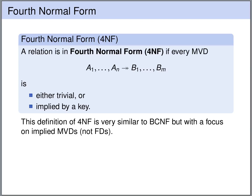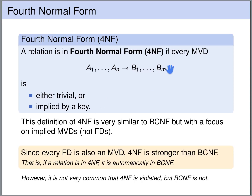A relation is in Fourth Normal Form if every multivalued dependency is either trivial — so the right-hand side is a subset of the left-hand side — or it is implied by a key of the relation. The Fourth Normal Form is in its definition very similar to Boyce-Codd Normal Form; the only difference is that functional dependencies are replaced by multivalued dependencies. And since every functional dependency is also a multivalued dependency, the Fourth Normal Form is stronger than Boyce-Codd Normal Form — if a relation is in 4NF, it is automatically in BCNF.